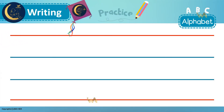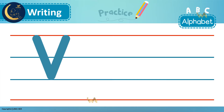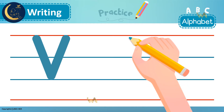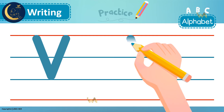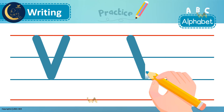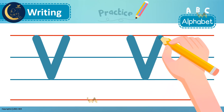Let's learn how to write the letter V. Hold your pencil and get ready to start with the uppercase V. We start at the top and make a line down to the right, and then we make one more line up to the right.